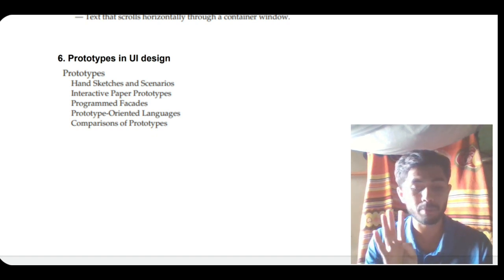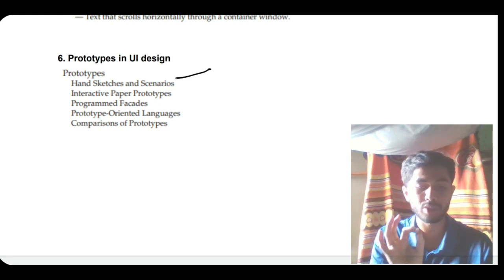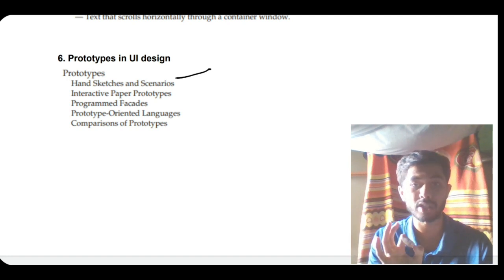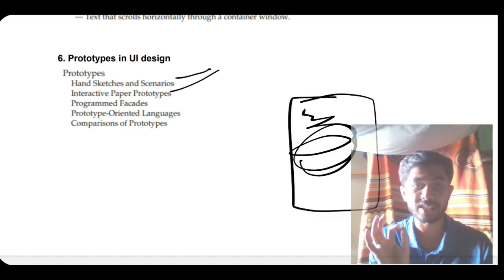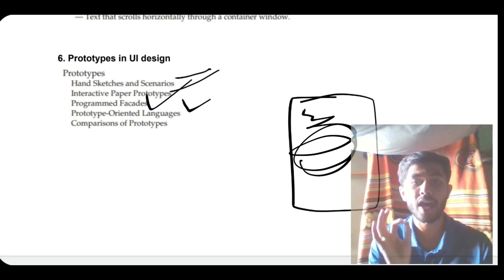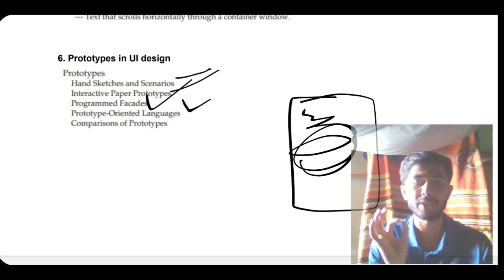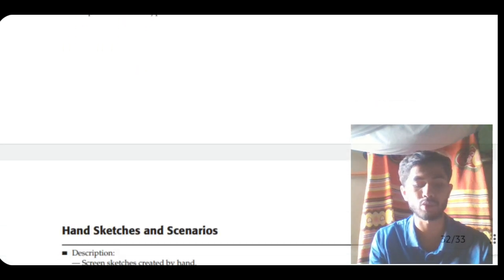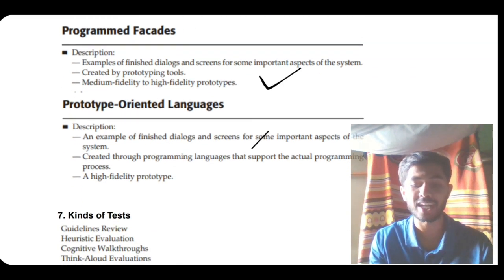Moving on to the sixth super important question: prototypes in UI design. The four main types are: hand sketches and scenarios, where you construct your design by hand; interactive paper prototypes, which are digital prototypes displayed on screen; programming facades, which use programming languages; and program-oriented tools for digitally designing interfaces. All prototypes are compared and the best one is chosen based on context.